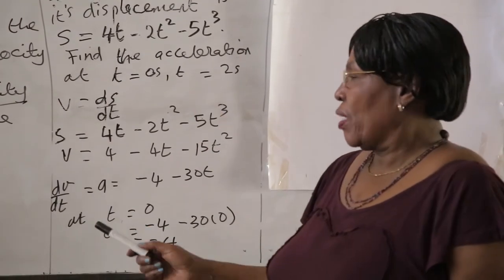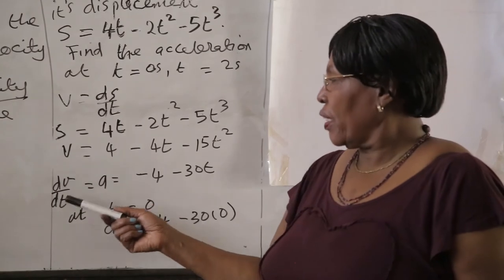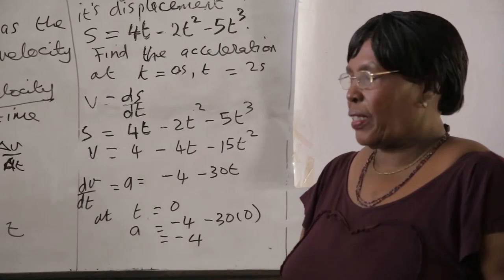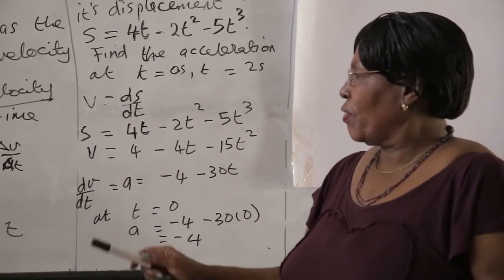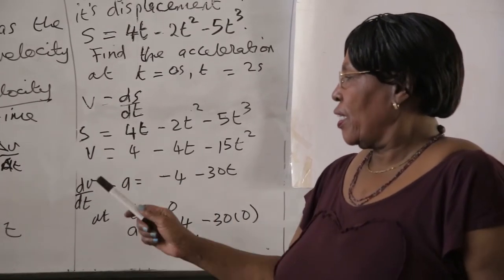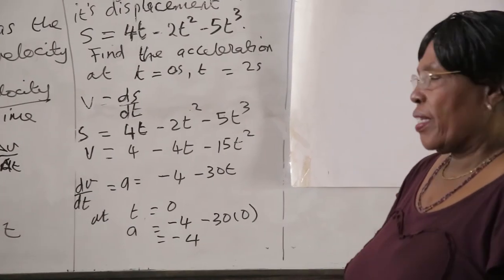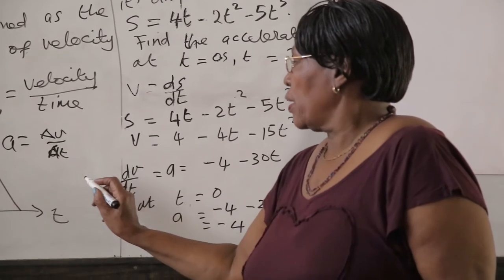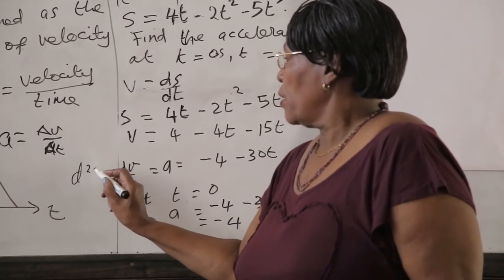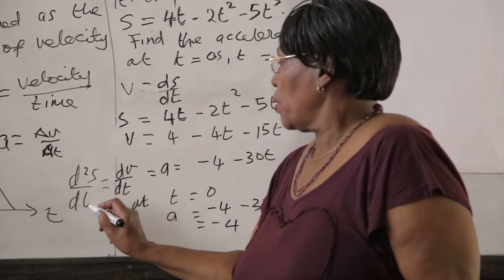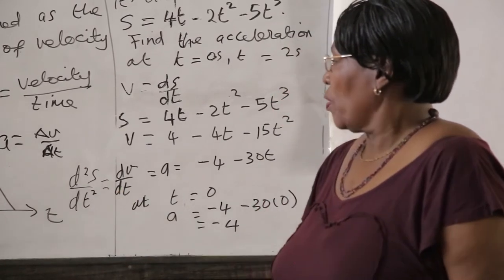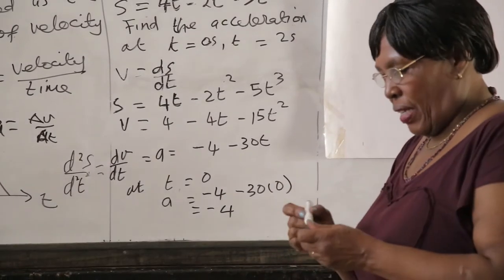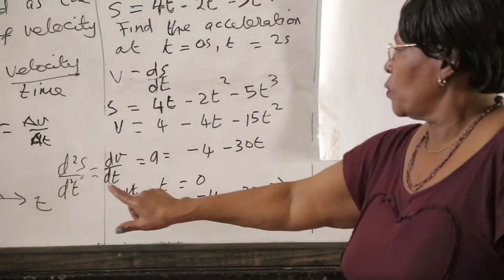It means then we go to the second derivative of S, because if V is the first derivative of S, it means the second derivative of S, d²S/dt², is equal to A. So actually this is also written as the second derivative of S with respect to t.